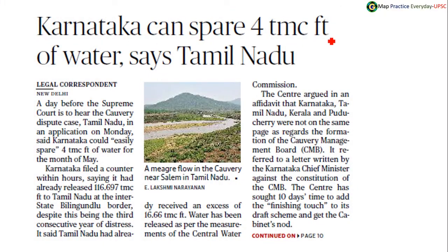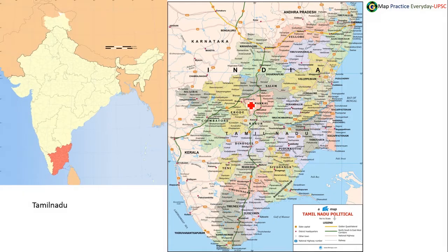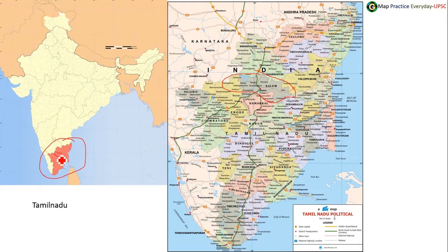The news about Karnataka's conspiracy for TMC footwaters says Tamil Nadu, and this picture is taken from Salem district of Tamil Nadu. Salem is located in this part of Tamil Nadu. Tamil Nadu is a southern part of India. In the map of India you can locate Salem here, and in the map of Tamil Nadu, Salem is here.